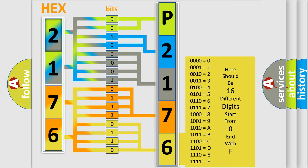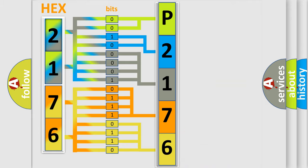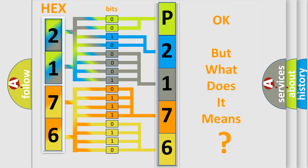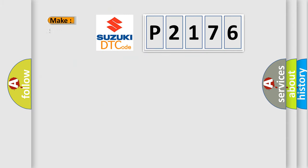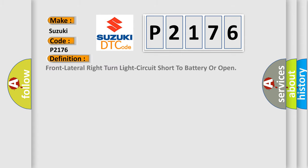We now know in what way the diagnostic tool translates the received information into a more comprehensible format. The number itself does not make sense to us if we cannot assign information about what it actually expresses. So, what does the diagnostic trouble code P2176 interpret specifically for Suzuki car manufacturers? The basic definition is: Front lateral right turn light circuit short to battery or open.